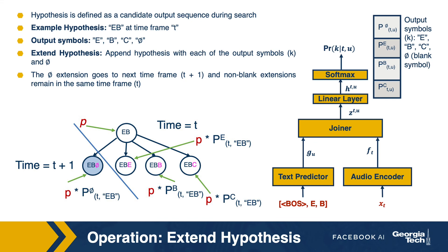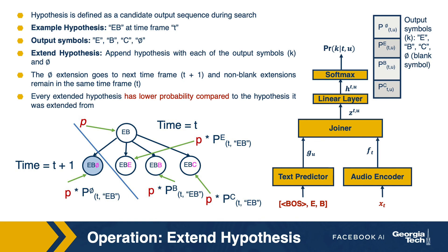One thing to note is that when we extend a hypothesis, the extended hypothesis will have lower probability than the hypothesis from which it was extended. This is because the probability of an extended hypothesis is the probability of the original hypothesis multiplied by the softmax probability value for the output symbol. Since we are multiplying two values both less than 1, the result is lower than either of them. We will use this fact during the beam search process, which we will describe in future slides.